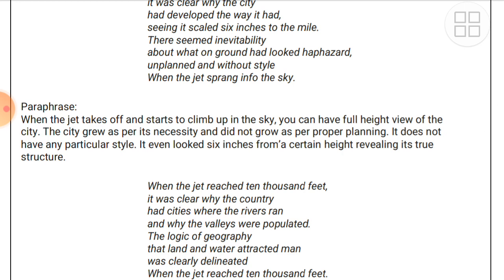When the jet takes off, the poet is sitting in a jet and goes to a height from where he observes the planet Earth — what is on the surface, how it looks. He observes the geographical situation of the earth from above — how India looks, how cities and villages appear, how the whole world looks from that height. From the airplane he sees how his city appears from above.